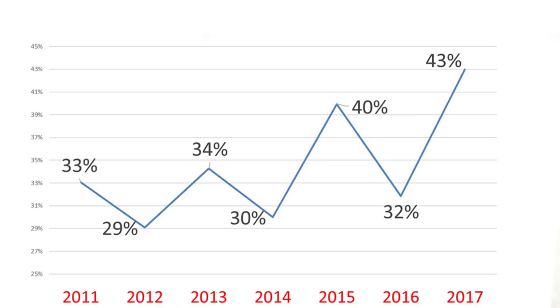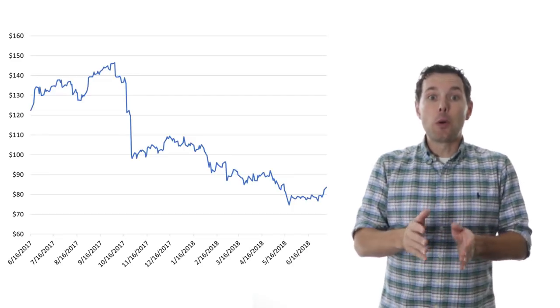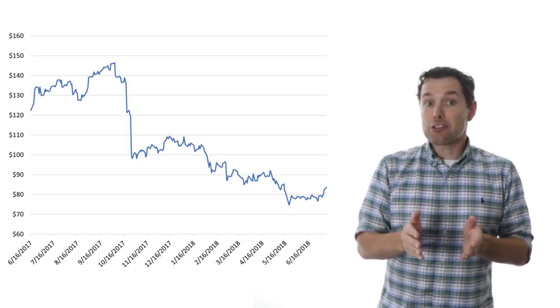So before we look at valuing Celgene, let's look quickly at how they got here. This is a chart of Celgene going back to the middle of last year. So the first drop right up here, this is where Morgan Stanley downgraded Celgene and said that they thought that there was a chance that a generic version of Revlimid, their big product, could come on the market as soon as 2020.